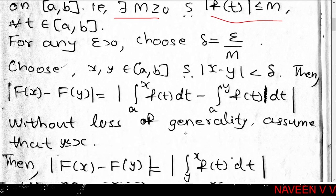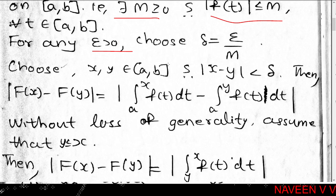All uniformly continuous functions are continuous, so it suffices to show F is uniformly continuous on [a,b]. For uniform continuity, given any positive epsilon, we need to find a corresponding delta satisfying: |F(x) - F(y)| < epsilon whenever |x - y| < delta, for x, y in [a,b]. Take delta = epsilon / M; then delta > 0.